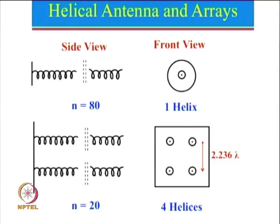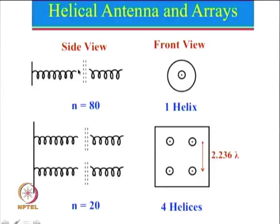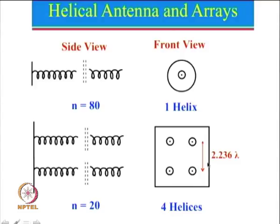Let us see this in a little more detail. This is the helical antenna side view: for n = 80 turns, one can see it will be a very long helical antenna. The front view shows the helix and the ground plane. For the 2 by 2 array, there is again a ground plane and now we have the array — the side view shows only 2 of the 4 elements since the other two are behind. So we have 2 elements of n = 20 in side view, and the front view shows all 4 helices. For n = 20, the spacing between the two helices should be 2.236 lambda.